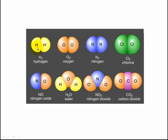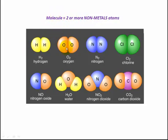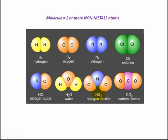Here we have hydrogen and hydrogen - two hydrogens chemically combined. When there are two or more non-metal atoms chemically combined they are called molecules. Oxygen is also a molecule - two non-metal atoms chemically combined. Here we have nitrogen dioxide: nitrogen and dioxide, two or more non-metal atoms chemically combined - it's a molecule.